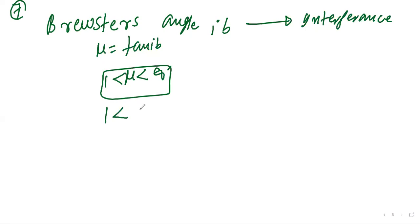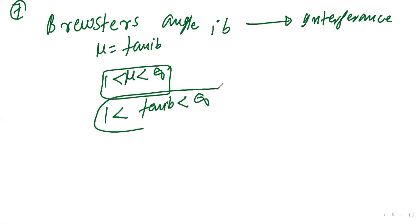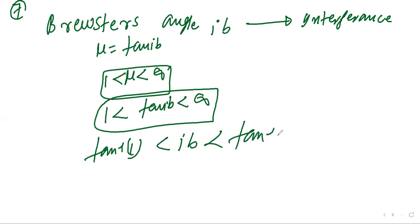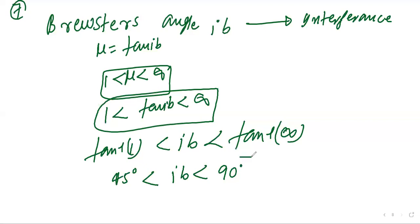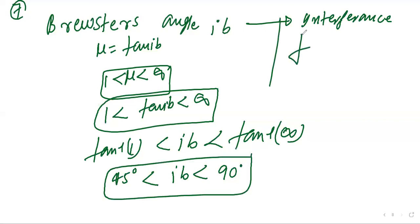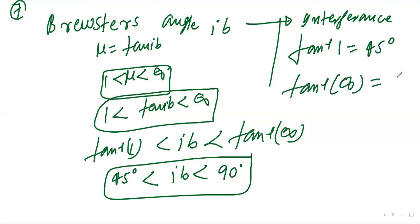Since 1 < tan(IB) < ∞, taking the inverse tangent: tan⁻¹(1) < IB < tan⁻¹(∞), giving 45° < IB < 90°. Remember that tan⁻¹(1) = 45° and tan⁻¹(∞) = 90°.